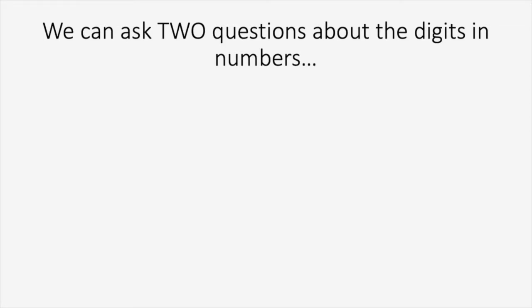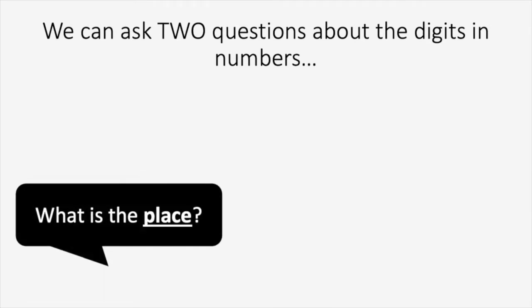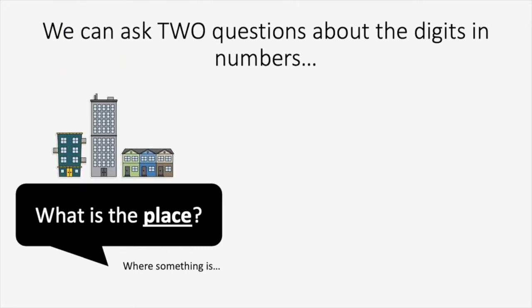There are two questions that we can ask about the digits in numbers. The first question we can ask is: what is the place? When we're talking about place, we're talking about where something is. For example, maybe right now you're in your home, or maybe later you'll be at the park. So if I ask you where you are, you would say at the park. When we're talking about place, we're talking about where something is.